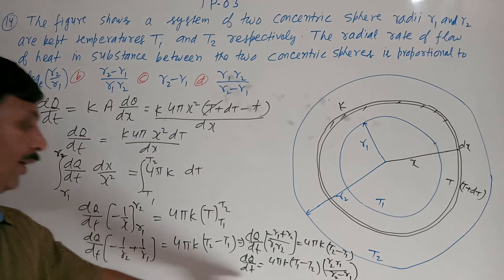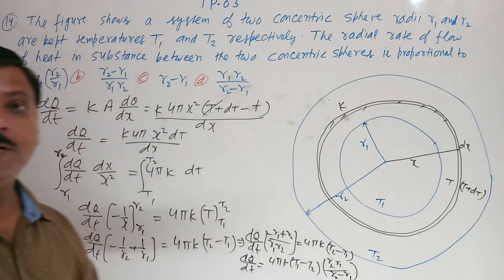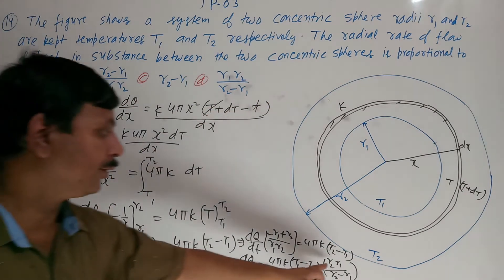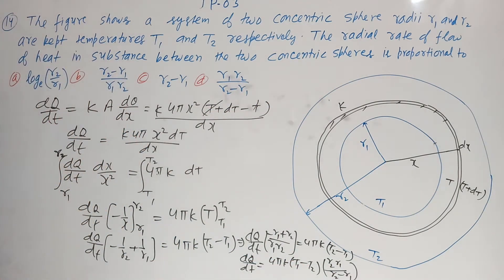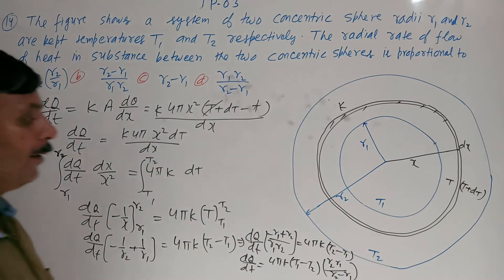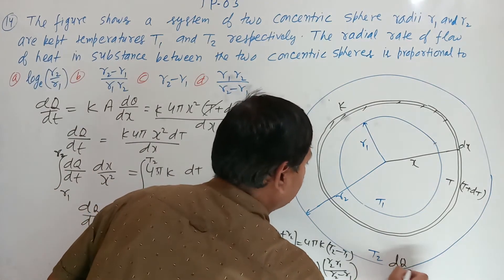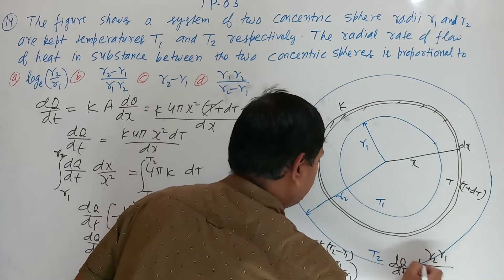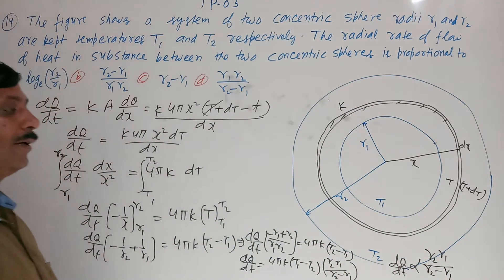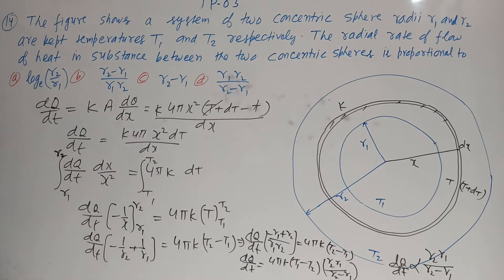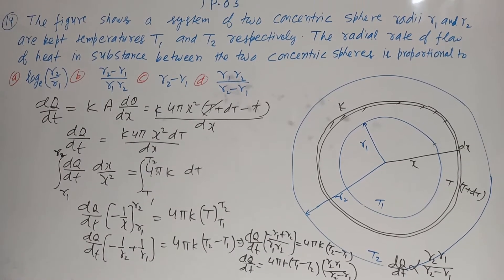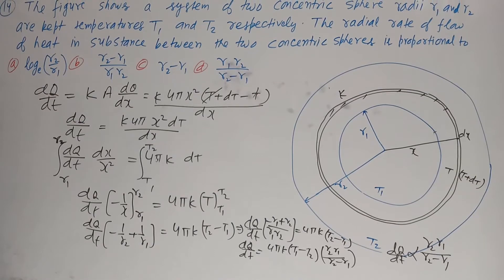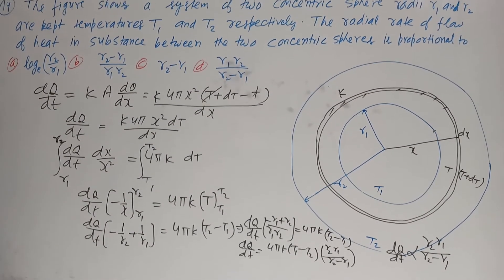So DQ upon DT is proportional to R1·R2 divided by (R2 − R1). The question asks what the radial flow is proportional to — it is proportional to R1·R2 upon (R2 − R1). Option D is correct.